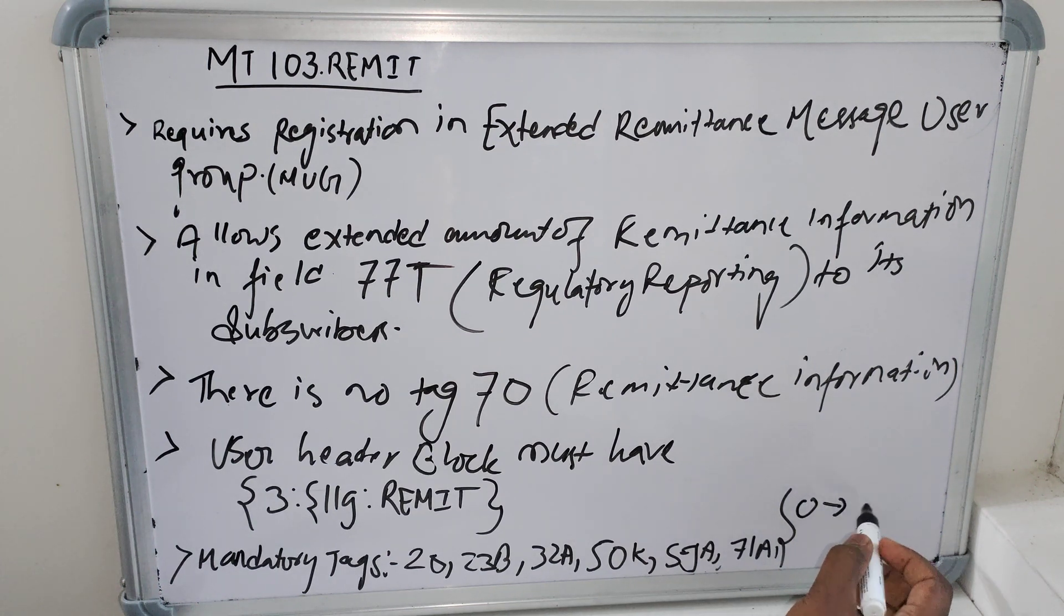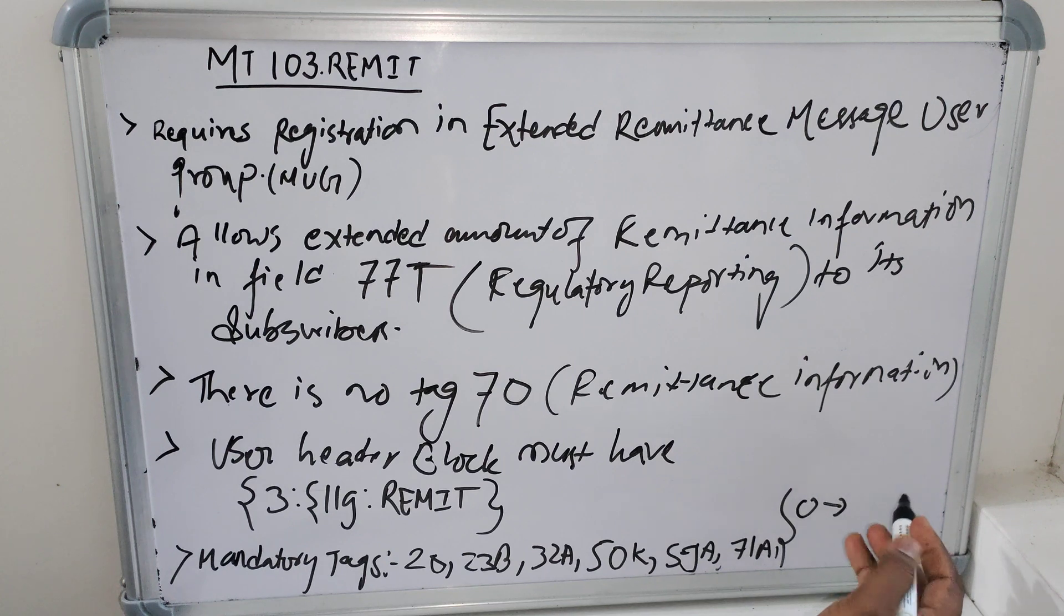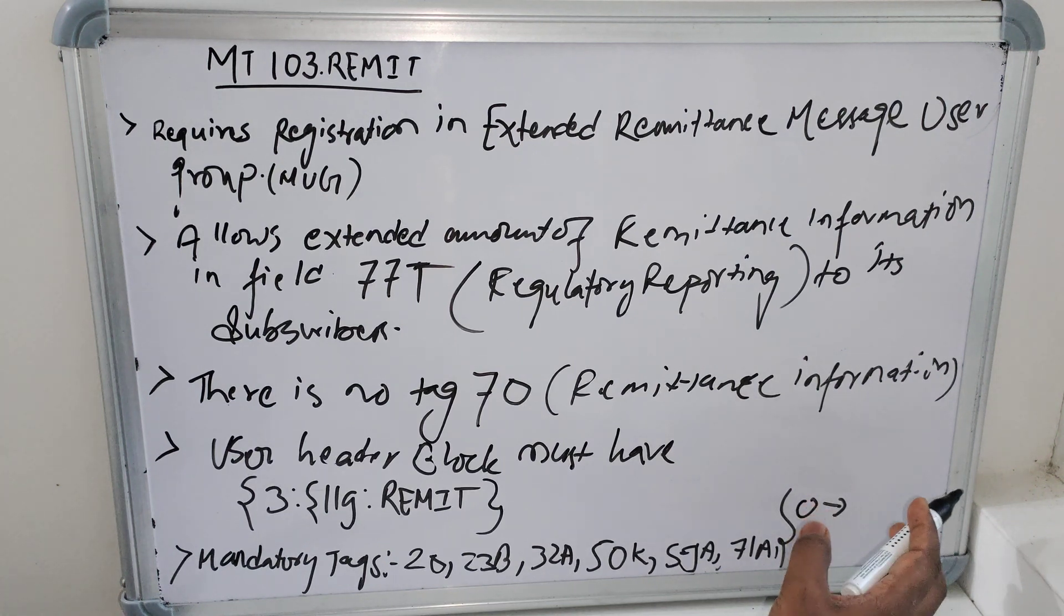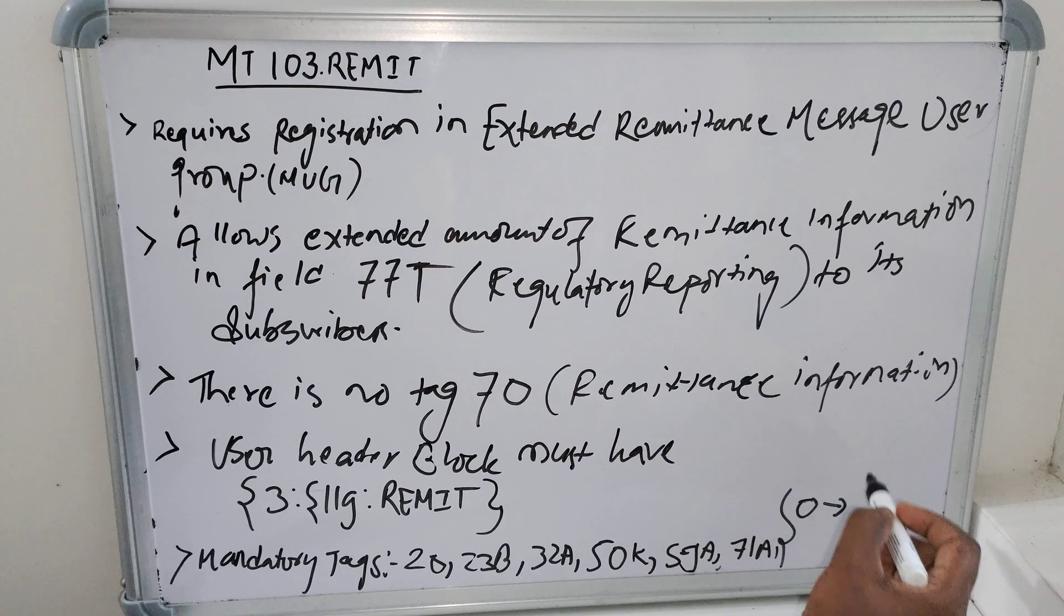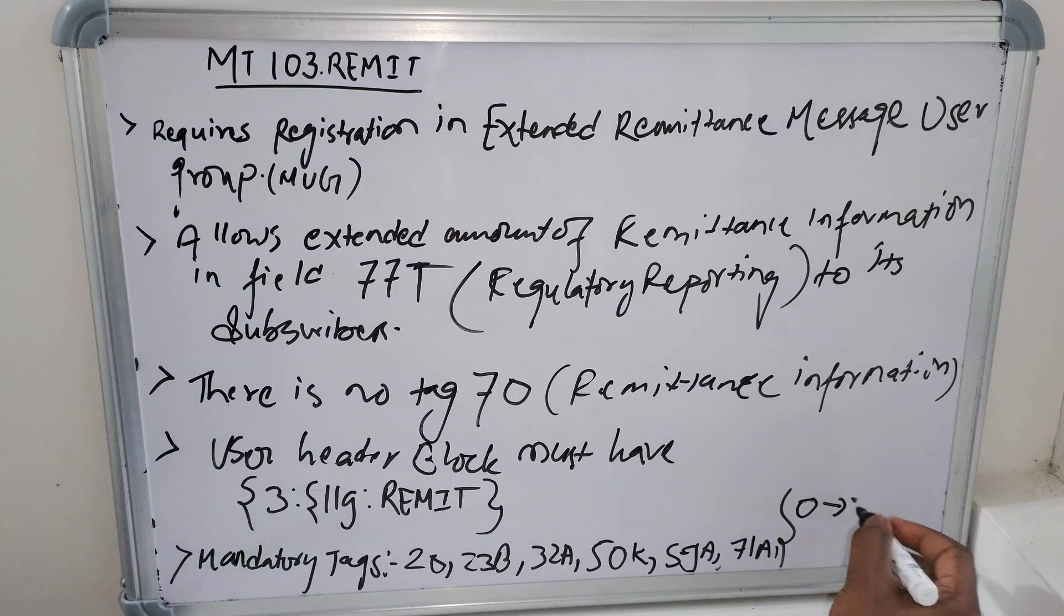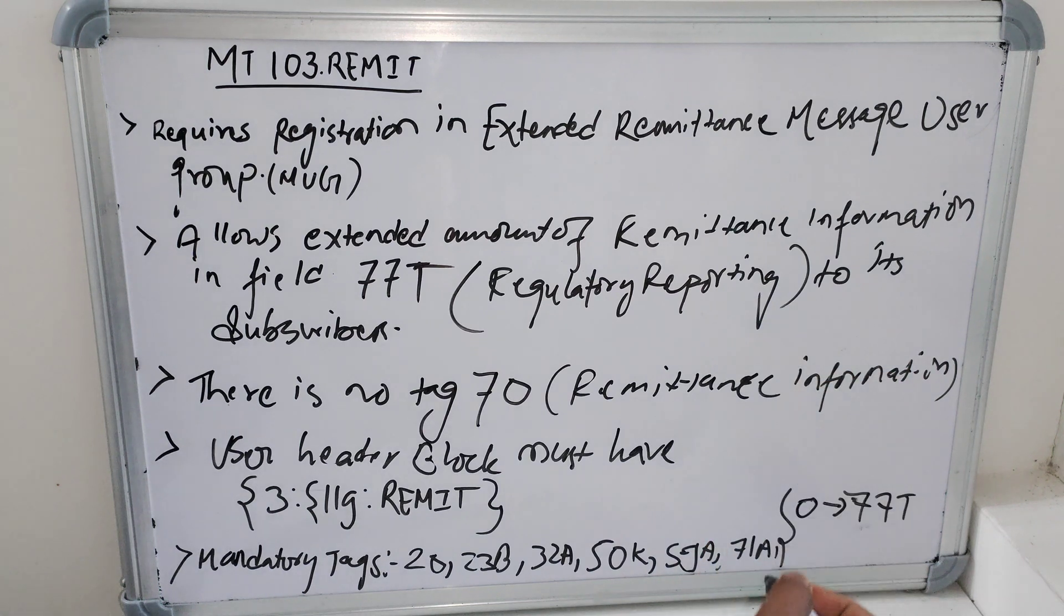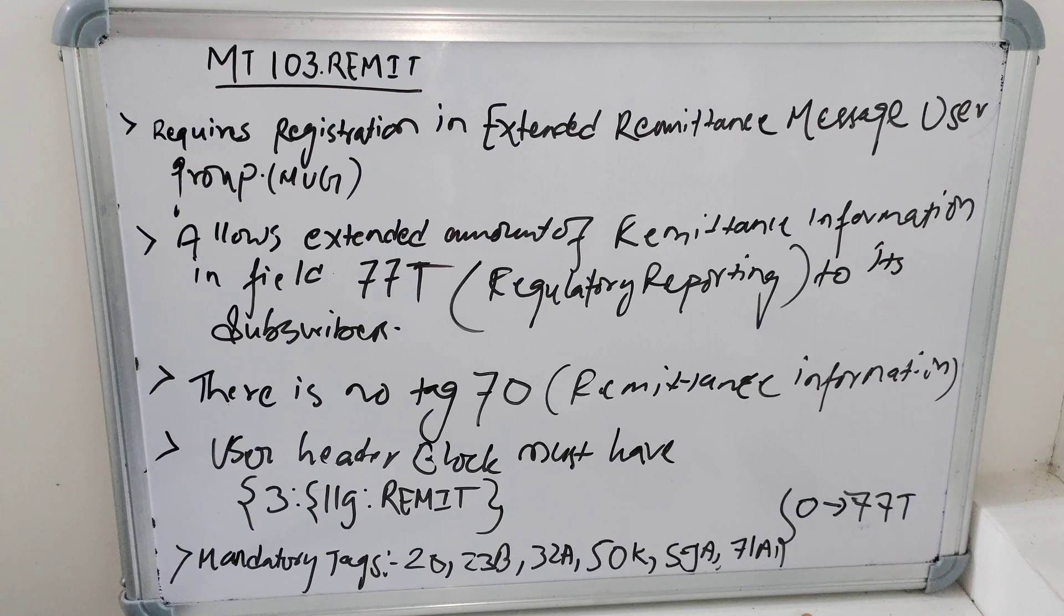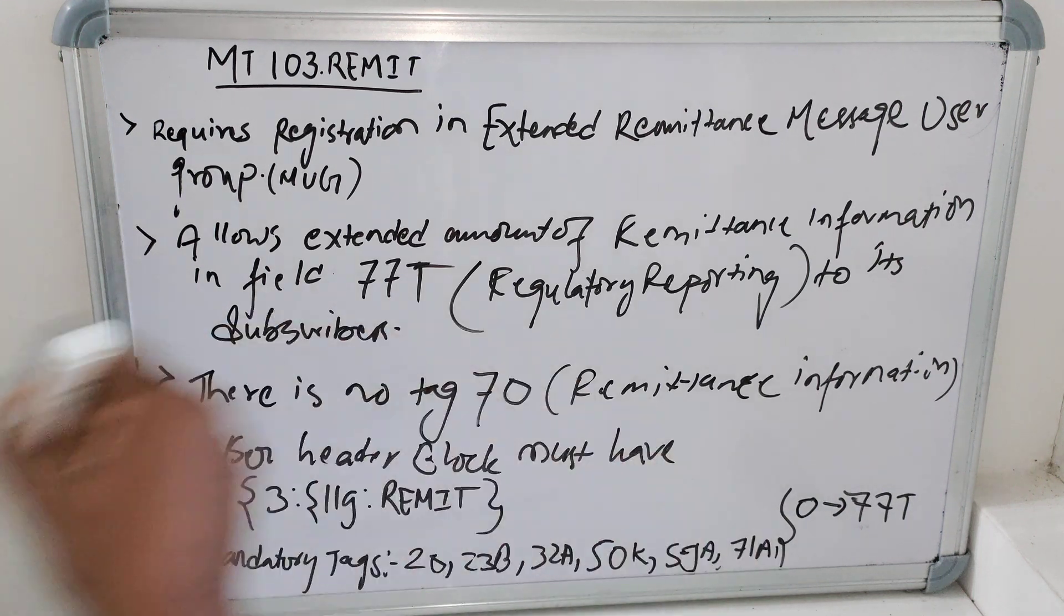Optionally we generally used to have 70 in the tag remittance information, but here in MT 103 remittance there won't be available. So here we will use 77T. This is basically specifies the codes for the statutory and or regulatory information required by the authorities in the country of the sender or receiver.